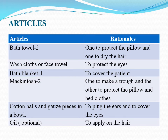Articles needed for hair washing procedure — a tray containing: a pair of gloves to prevent cross infection; two bath towels (one to protect the pillow, one to dry the hair); face towel to protect the eyes; one bath blanket to cover the patient; two mackintosh (one to make a throw, one to protect the pillow and bed); cotton balls and gauze pieces in a bowl to plug the ears and cover the eyes; oil to apply on hair; shampoo to remove dirt; hair comb; kidney tray and paper bag to collect loose hair and cotton plugs; one basin and one mug; one bucket to collect dirty water; two jugs (one for hot water, one for cold water); low stool; linen if needed.